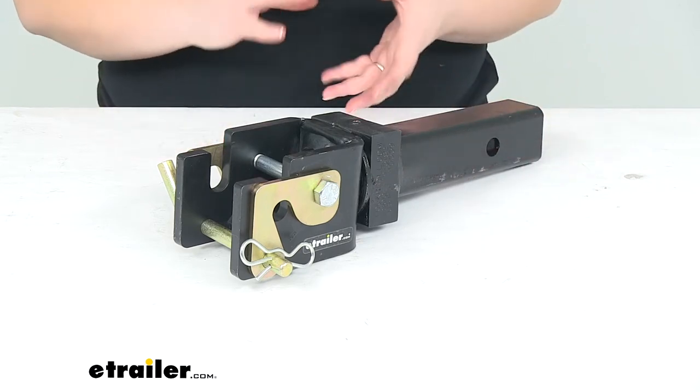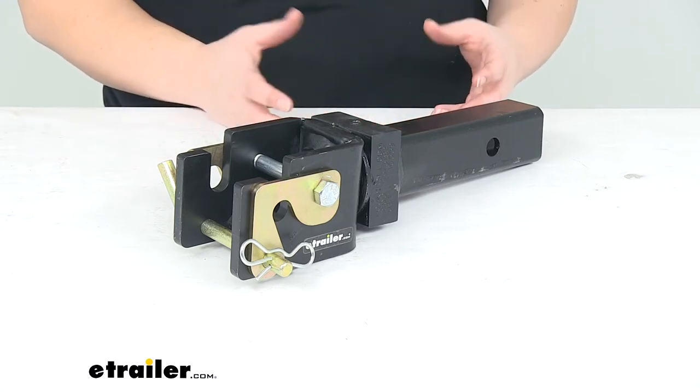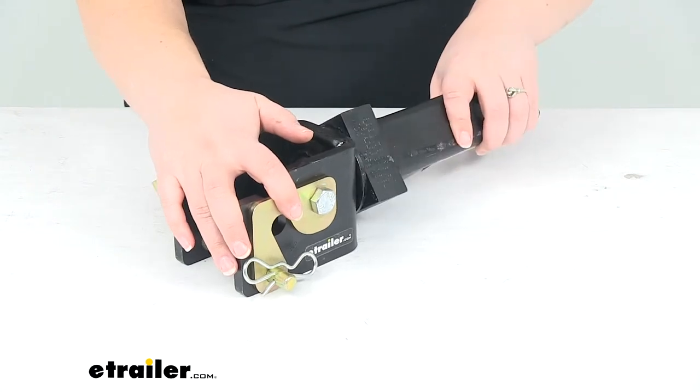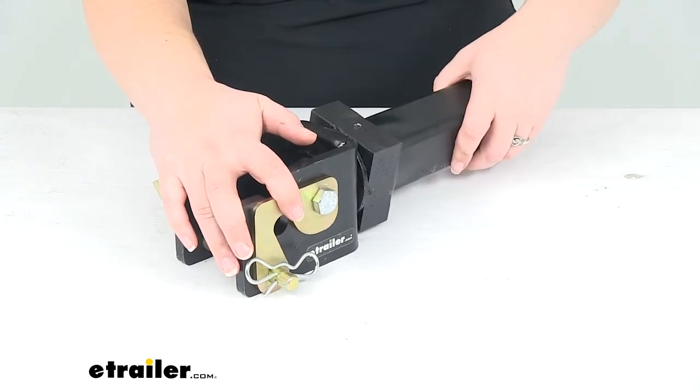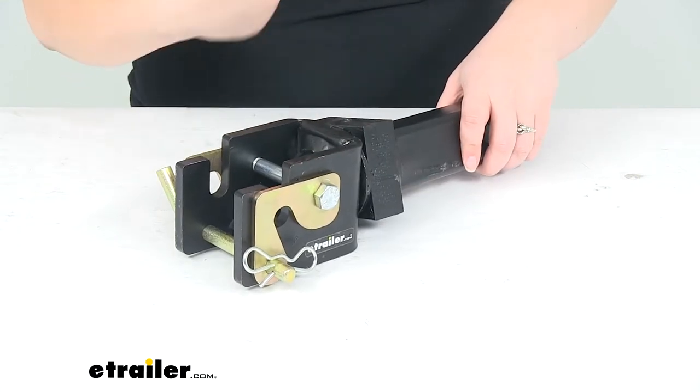This is going to be for those off-road situations where we need to tow something behind us but maybe we're going over some rough terrain and we need that hitch to be able to articulate with us. This is gonna be able to turn and accept or handle that motion as we're going down the road. This does turn 360 degrees.